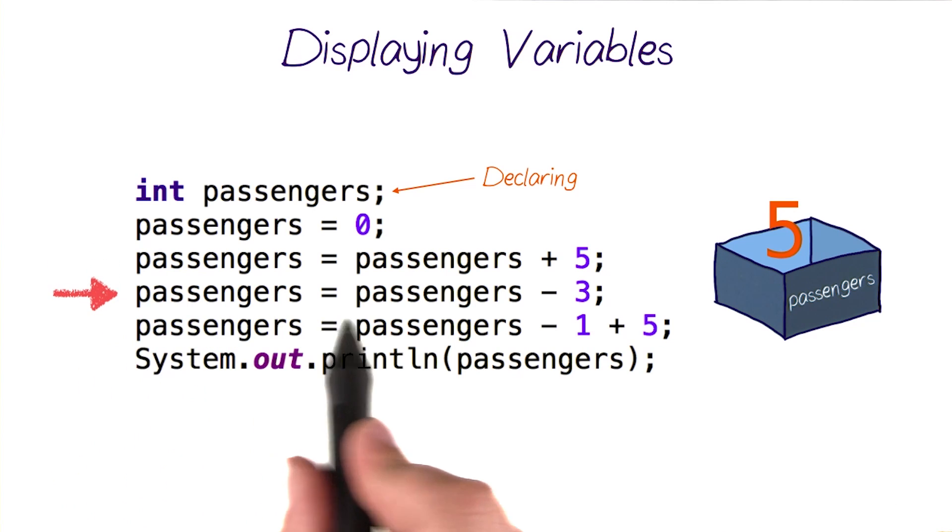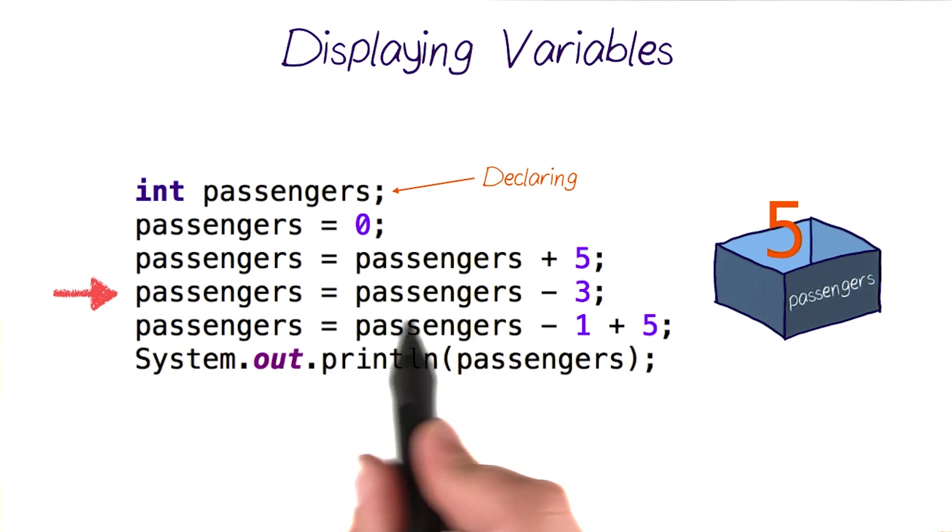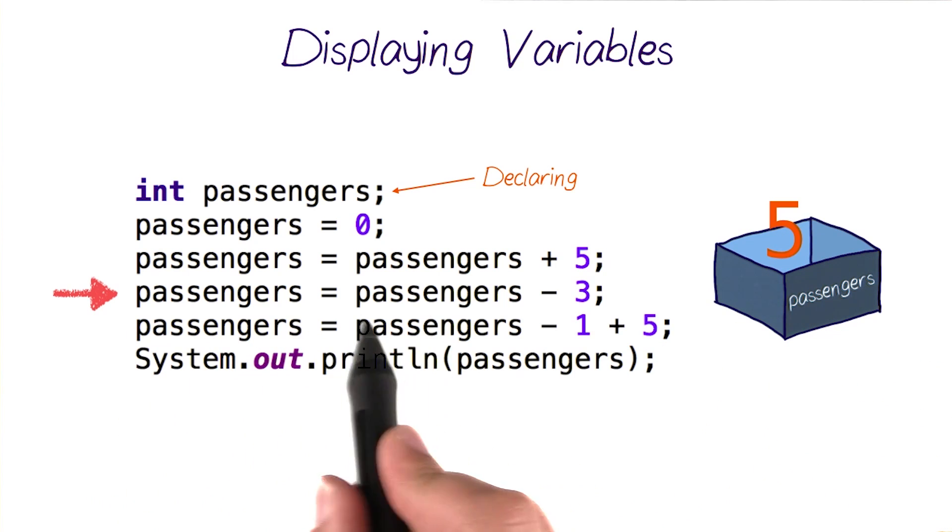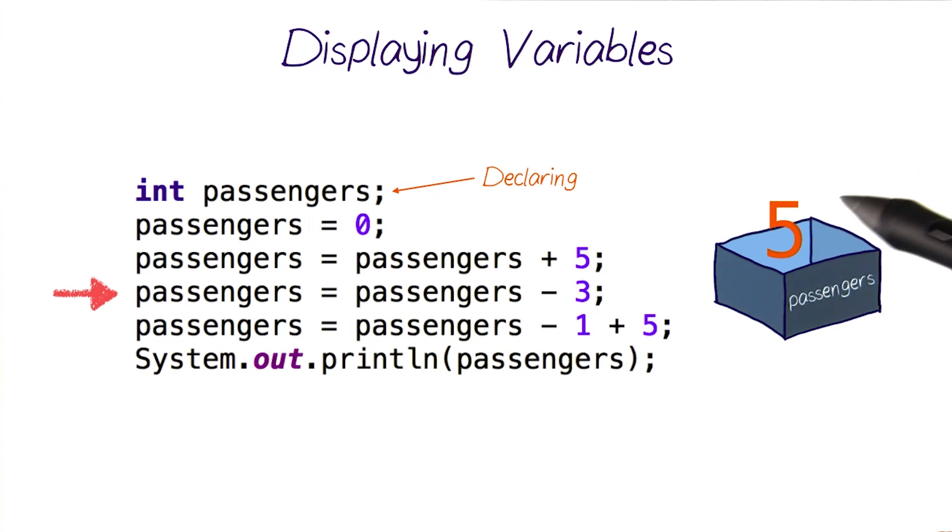And then, the following statement here is subtracting 3 from the old value, which is 5, and updating passengers to this result of the subtraction. So, we subtract 3 from 5, making it 2, and passengers becomes 2.